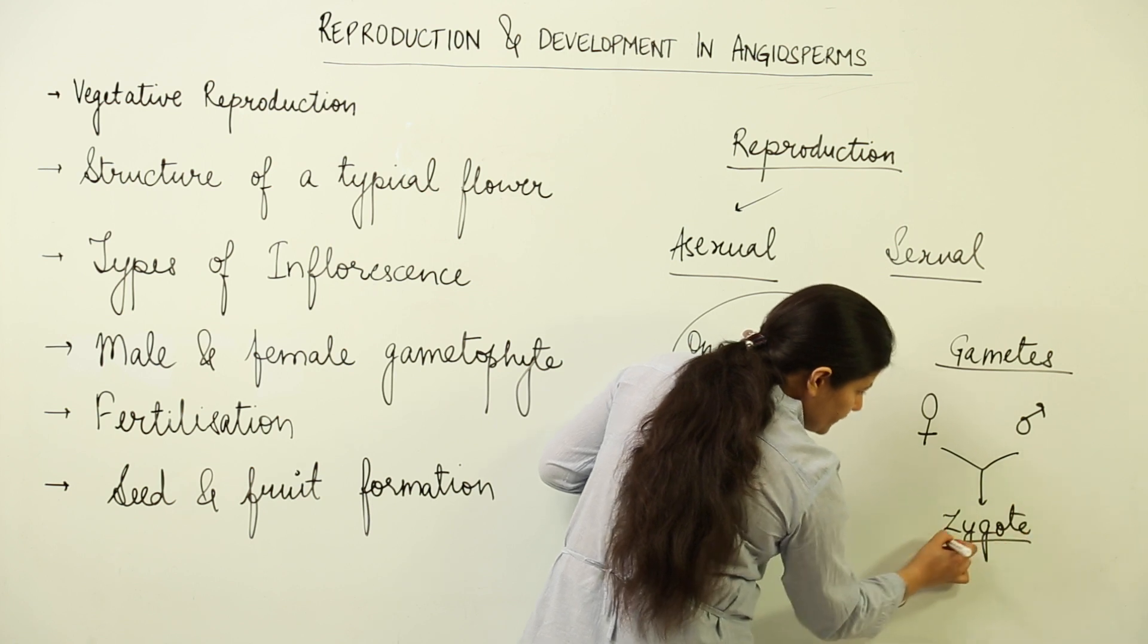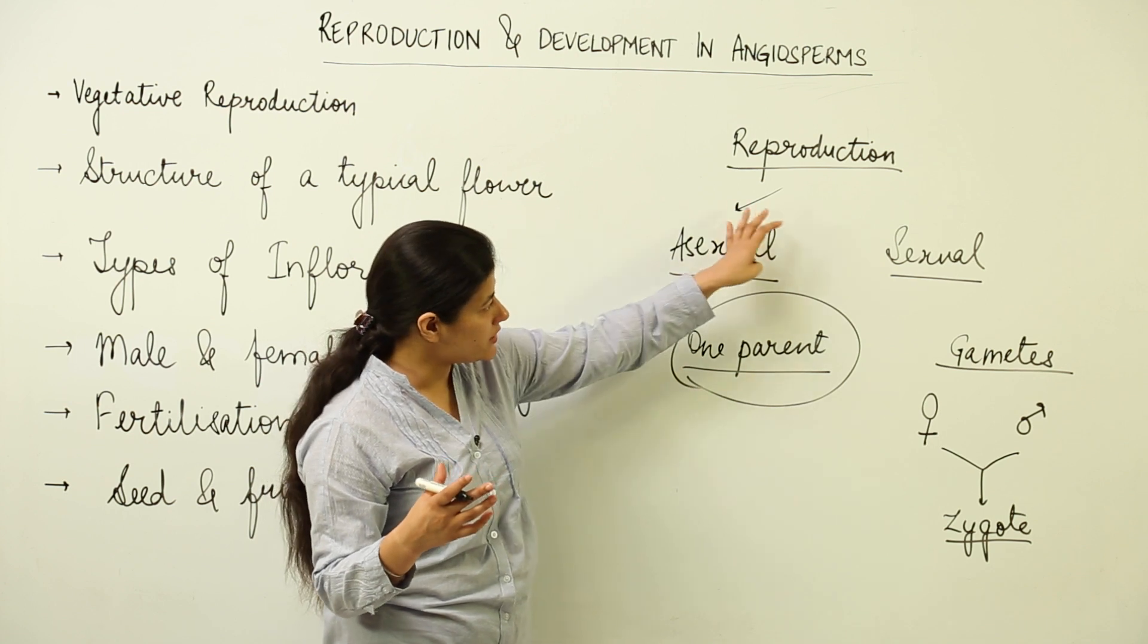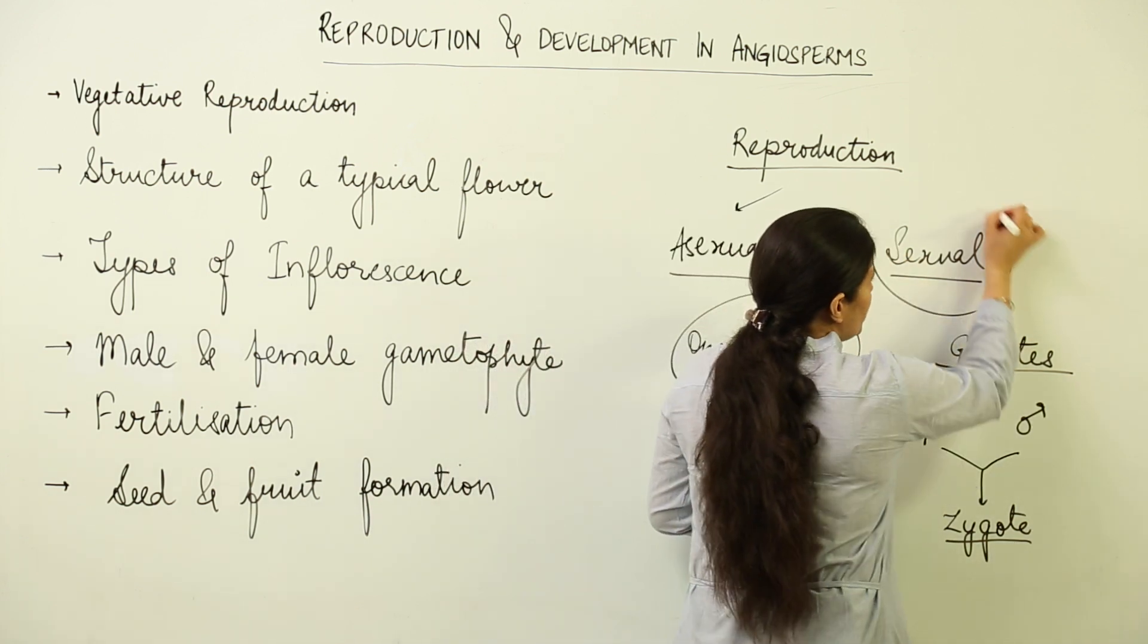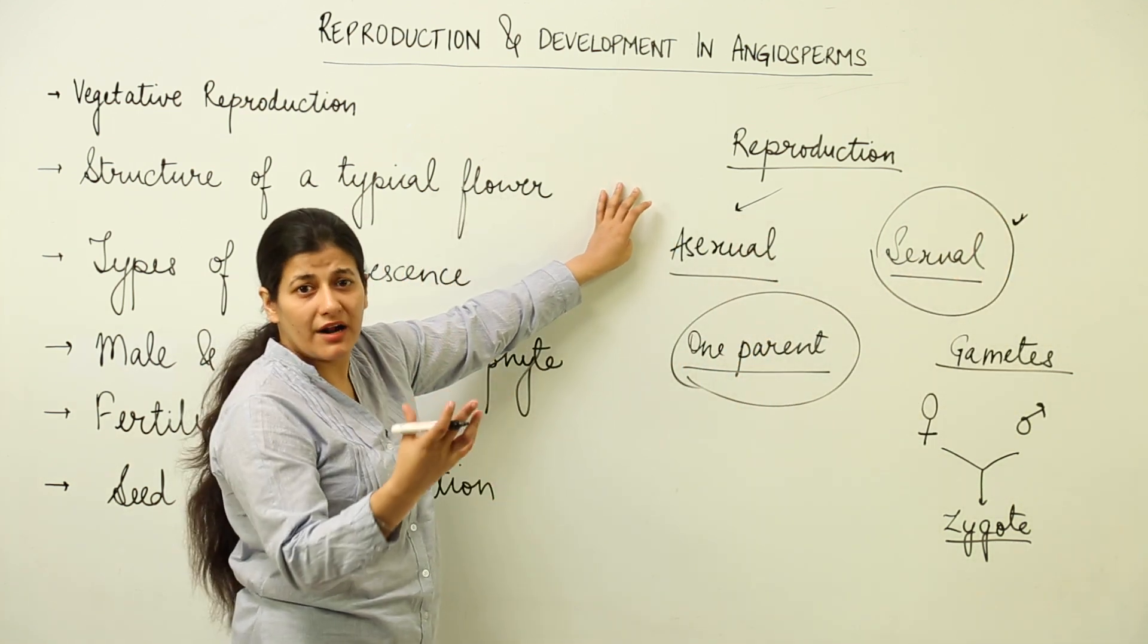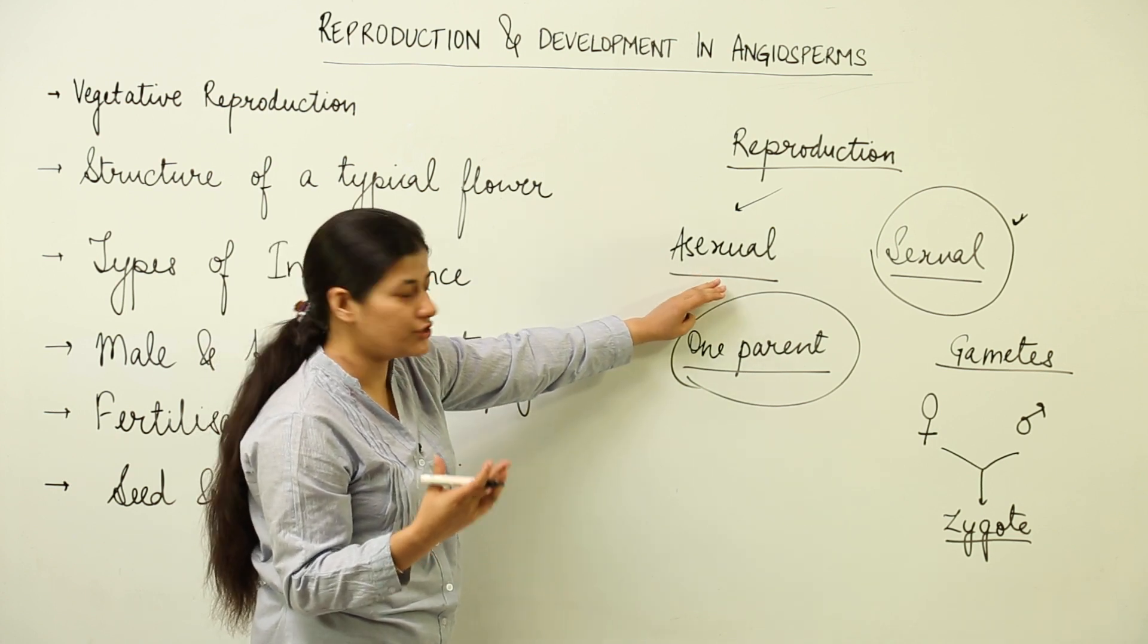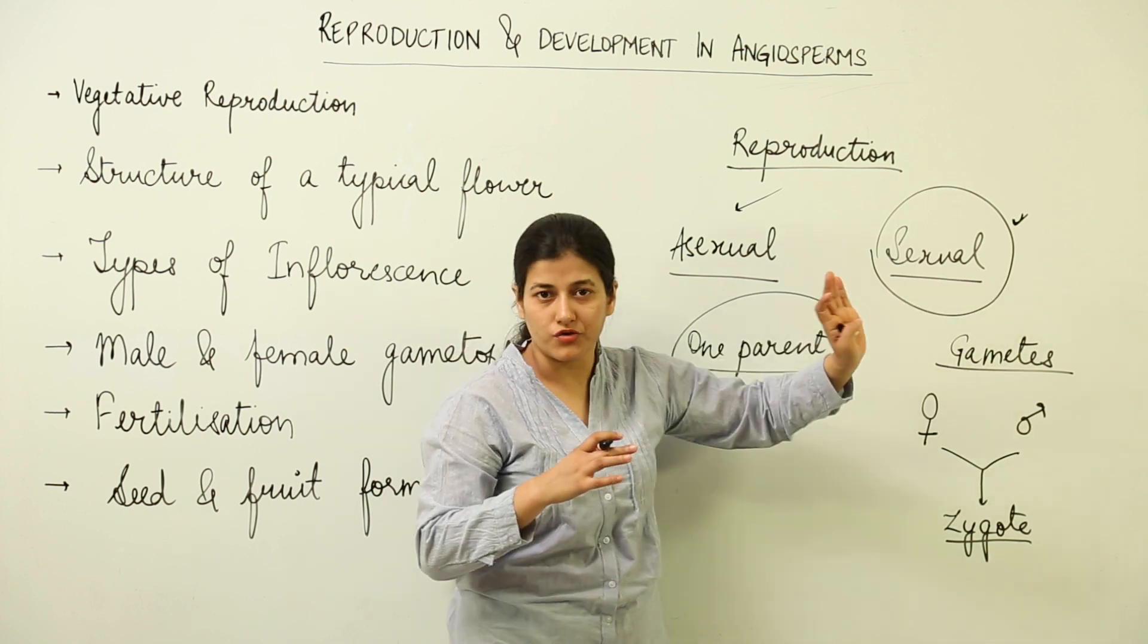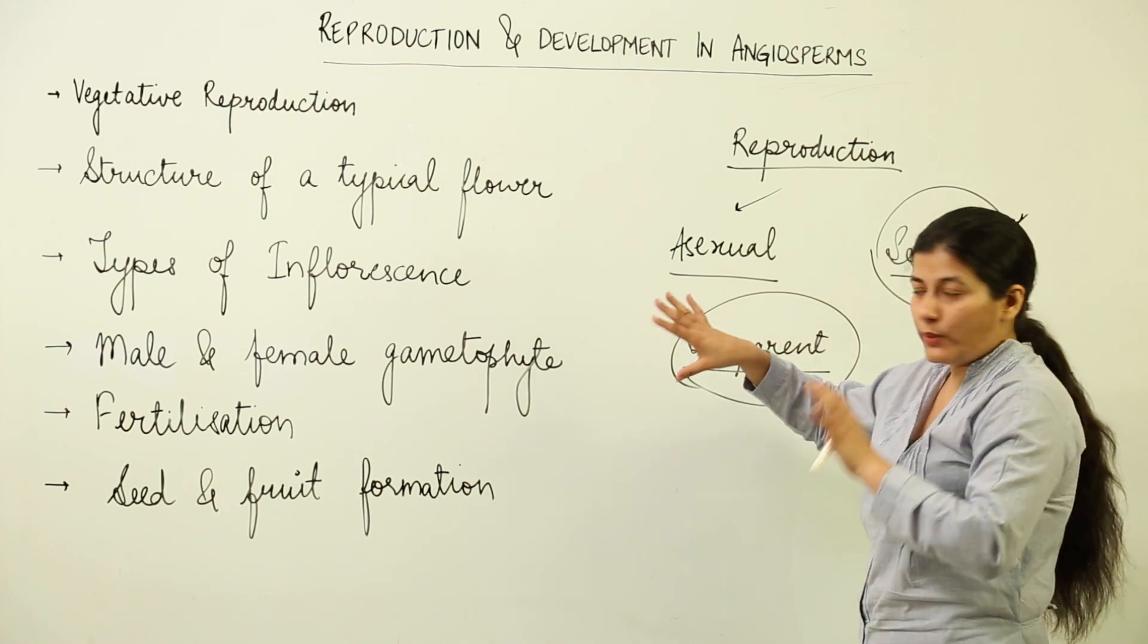What you have to keep in mind is that asexual reproduction involves only one parent and there is no formation of gametes. When we talk about sexual reproduction, there would be formation of gametes, both male and female, and they would unite by the process of fertilization and give rise to a zygote. Our main topic to be studied in great detail would be sexual reproduction, because we are dealing with flowering plants. Flower is the site of sexual reproduction in an angiosperm. We have a little bit of discussion about asexual reproduction in the lessons that follow.